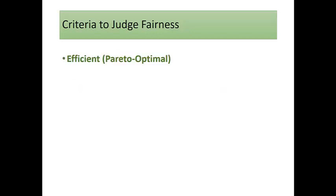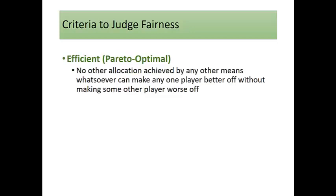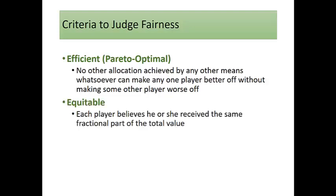A third criteria is called efficient or Pareto optimal, meaning that no other allocation achieved by any other means whatsoever can make any one player better off without making some other player worse off. And our final criteria is called equitable: each player believes that he or she received the same fractional part of the total value.